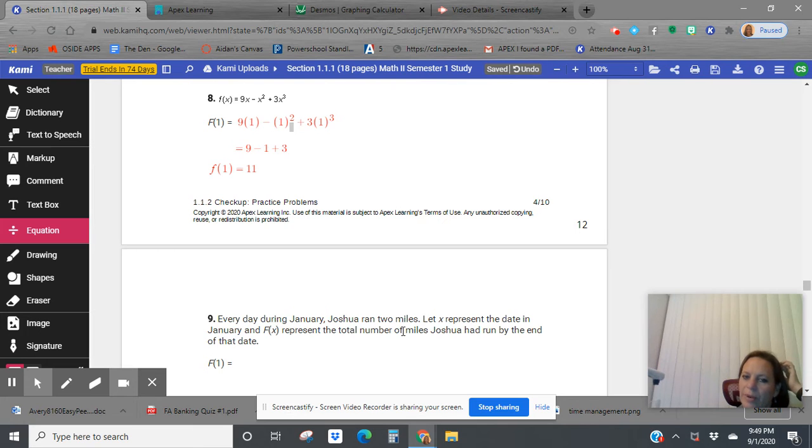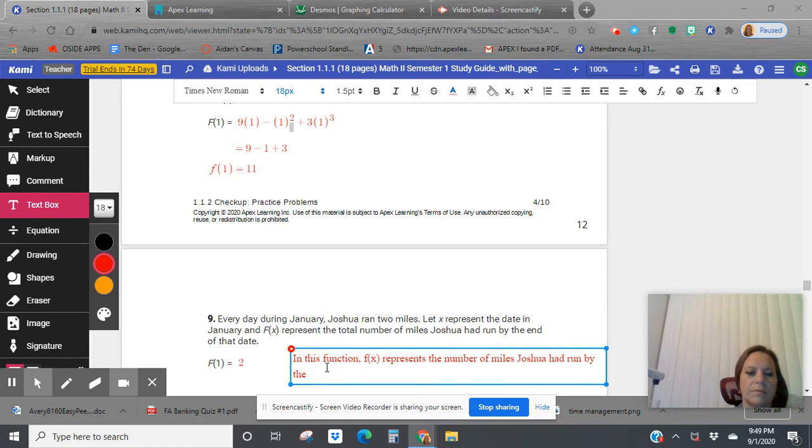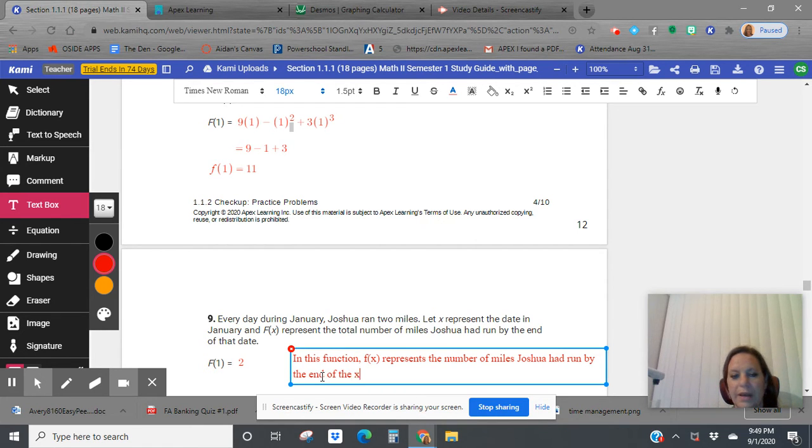Every day during January, Joshua ran two miles. Let x represent the date in January and f of x represent the total number of miles Joshua had run by the end of that date. So how many miles on that first day? We're just going to say two. In this function, f of x represents a number of miles Joshua had run by the end of the x day. Because Joshua ran two miles by the end of the first day, f of one equals two.